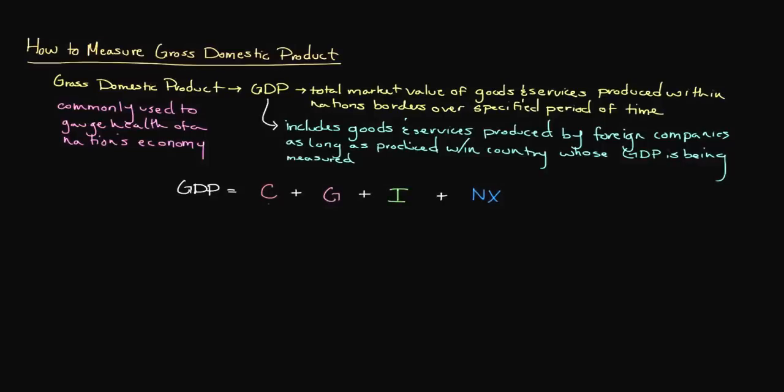The C represents consumer spending, also known as personal consumption, which is the amount of money spent by consumers on finished goods and services. Consumer spending in the United States accounts for the largest percentage of GDP, totaling approximately 65 to 70% altogether.